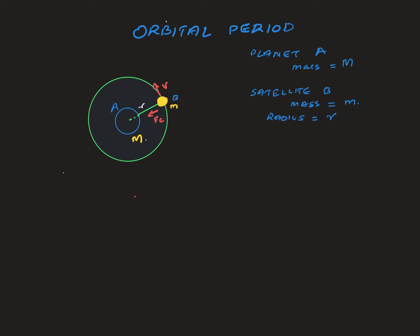This video is about finding the orbital period of a satellite, or a planet orbiting around a star. We have planet A with mass M and satellite B with mass m, and they have a radius r - the distance from the centre of the planet to the centre of the satellite. This is circular motion with a linear velocity v and a centripetal force, which is actually the net force provided by the gravitational force between the planet and the satellite.